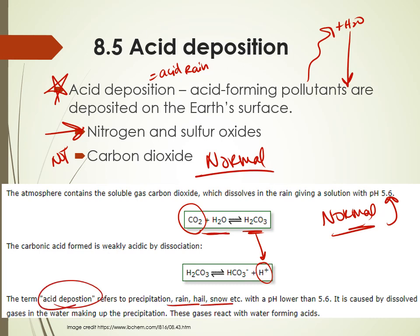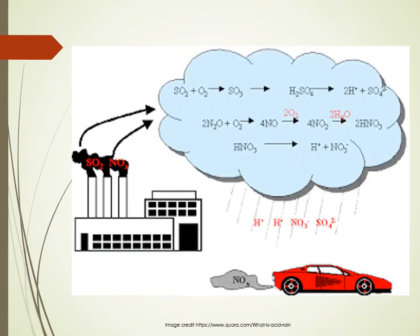Nitrogen and sulfur oxides are going to lead to acid deposition — acid rain, acid hail, or acid snow — that has a pH lower than 5.6, because of pollutants being released into the atmosphere causing precipitation to be more acidic than the 5.6 that comes from CO2. Examples of the pollutants: sulfur oxides and nitrogen oxides from our cars and from factories.